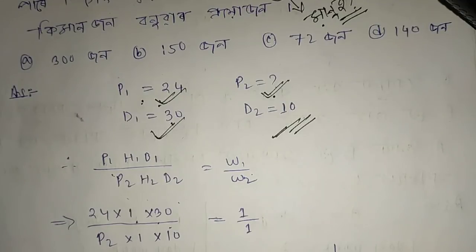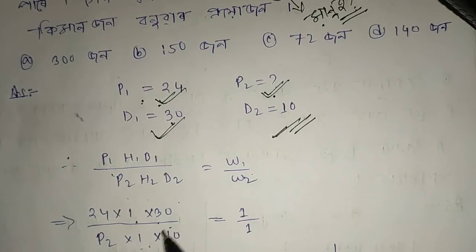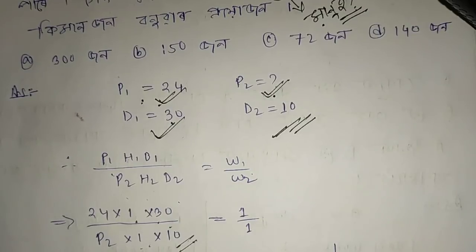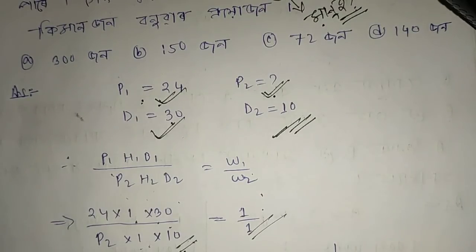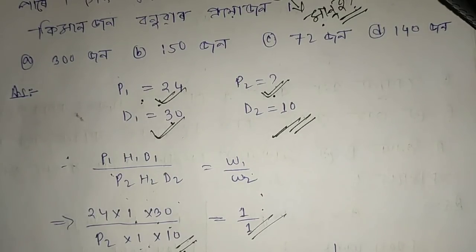For the last person, P2 is equal to what we need to find. H2 is 1 day, and D2 is 20 days. For W1 and W2, they are both 1, so we put them in. We put the values into the formula.